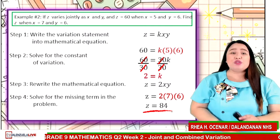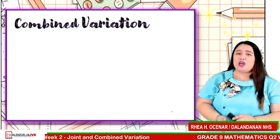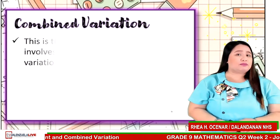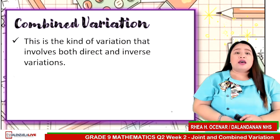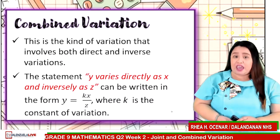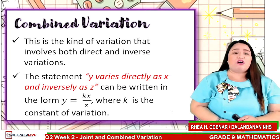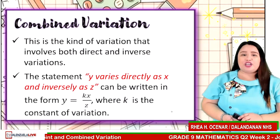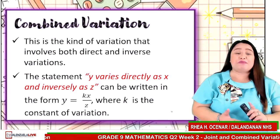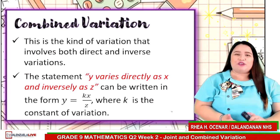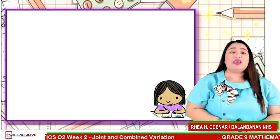Very good. Let us proceed to the last type of variation, and that is combined variation. Combined variation is the kind of variation that involves both direct and inverse variations. The statement Y varies directly as X and inversely as Z can be written in the form Y is equal to KX over Z, where K is the constant of variation.